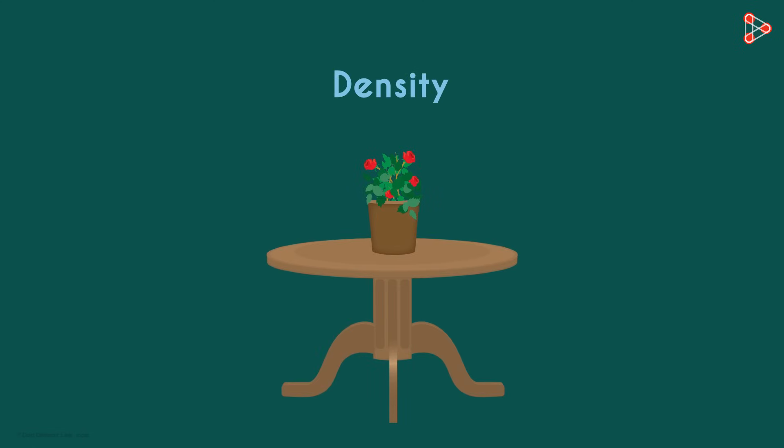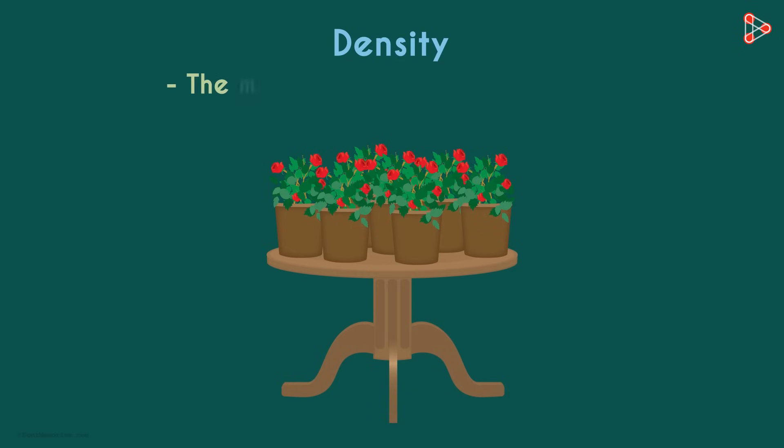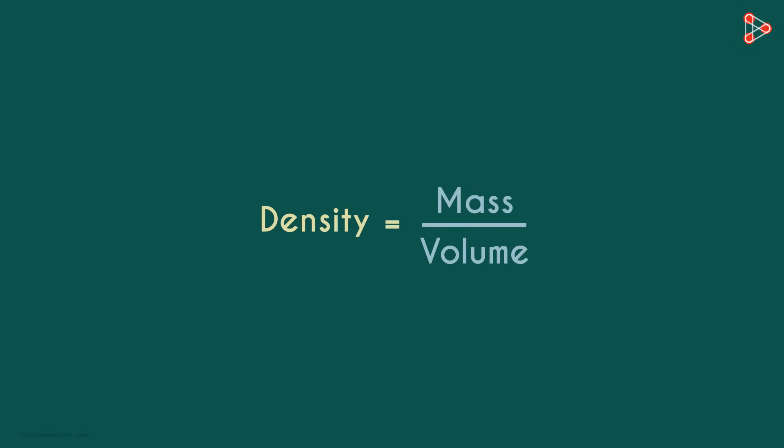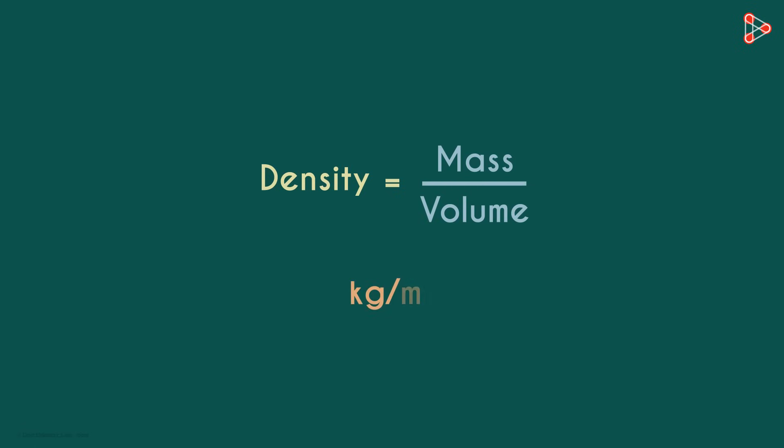We've understood what density is. In the same given amount of space, if there are more things, we say that it's denser. Density is simply the measure of how compact the mass in a substance or object is. It's mass per unit volume. And based on this formula, we can say that its unit is kilogram per meter cubed.